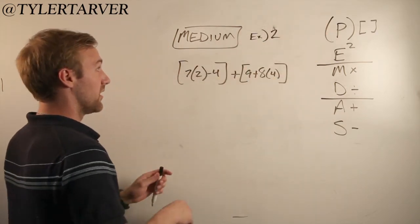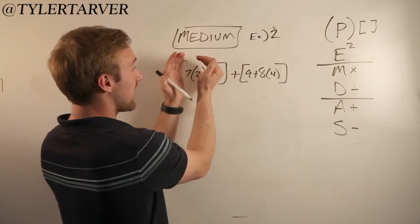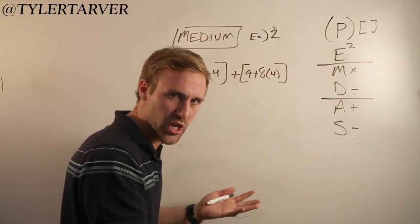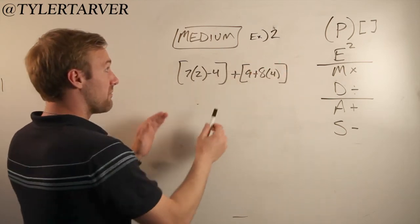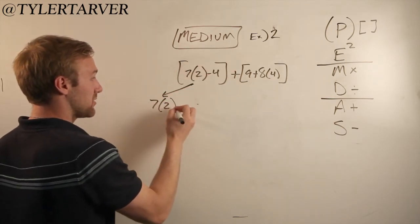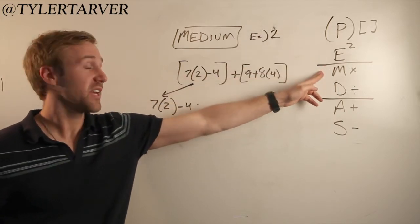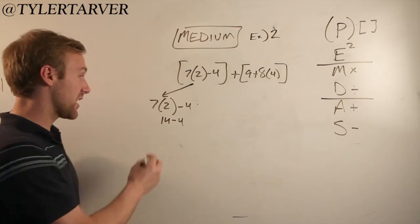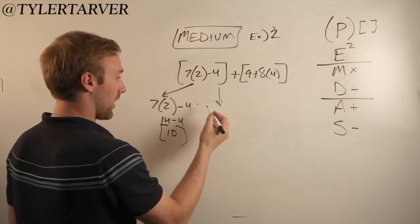Do we have any parentheses? Yes. We want to do the innermost ones first because they're inside the outer brackets — we do the inside ones first, it's like inception. So inside that inner parentheses: (7 times 2 minus 4). No exponents, but there's multiplication — 7 times 2 is 14. Only one operation left: 14 minus 4 is 10. So inside that bracket is 10. Make sure you bring down the plus sign — a lot of students forget to bring down the signs.